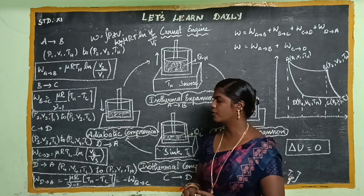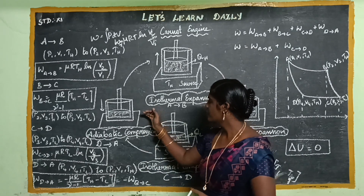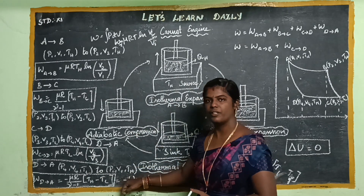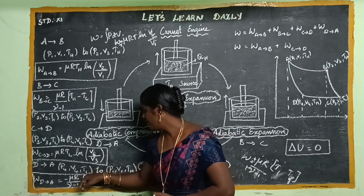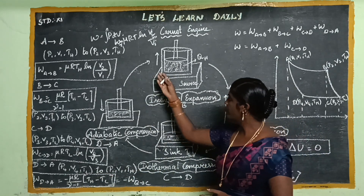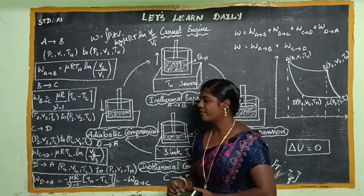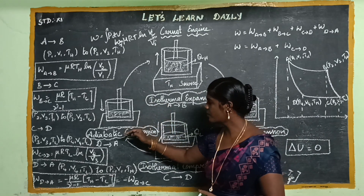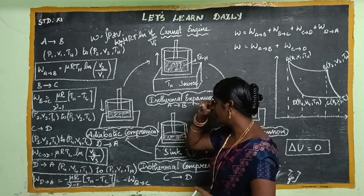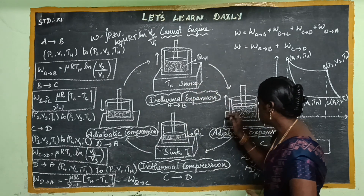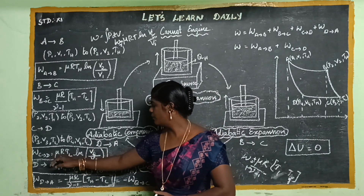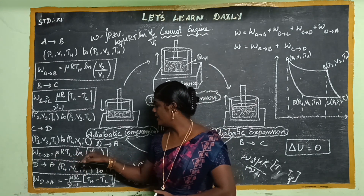The last step is D to A, again using the insulating stand. Starting at P4, V4, TL and returning to P1, V1, TH — from low temperature back to high temperature. This is adiabatic compression. The work done for D to A is W = μRTL · ln(V4/V3). So the four steps are: A to B, B to C, C to D, and D to A.